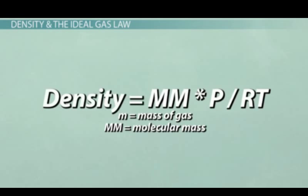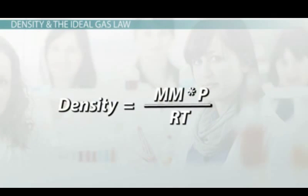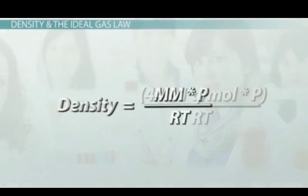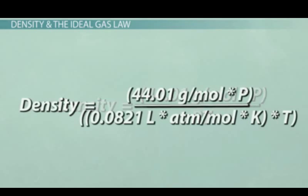Using this equation, we are now ready to calculate the density of gas using temperature and pressure. Let's use CO2 as we were discussing earlier. The molecular mass of CO2 is 44.01 grams per mole.